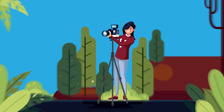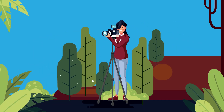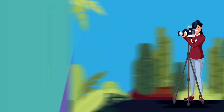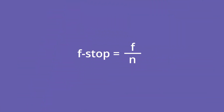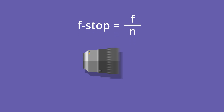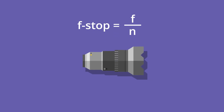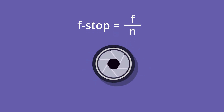To get the proper exposure, you must know how small or big to set your aperture. The aperture opening is measured in f-stops, also known as focal ratio. F-stop equals f over n, where f is the focal length and n is the aperture diameter.